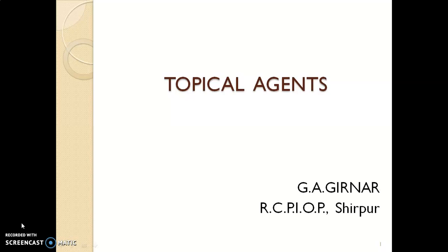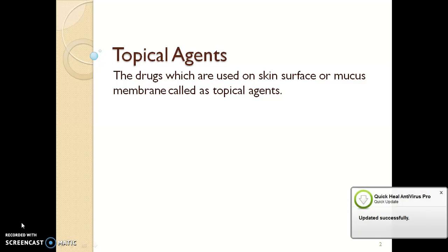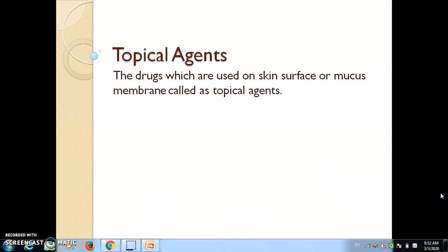Now we will see in detail all things which are related with this topic. First, the definition of topical agent — topical agents, or you can say the drugs, are nothing but which are used on the skin surface or mucous membrane. Simply you can say the substance which we can apply on the skin or external surface of our body or on mucous membrane, that substance can be called as topical agent, like different creams, powders, and many more compounds.